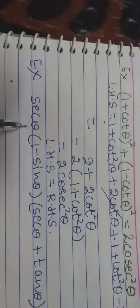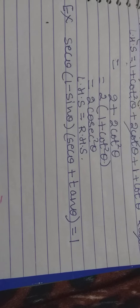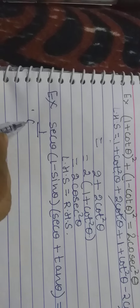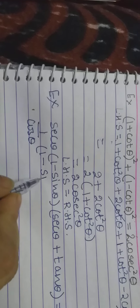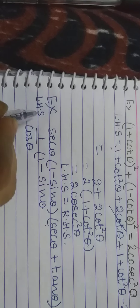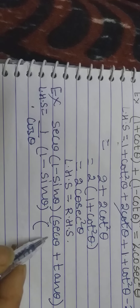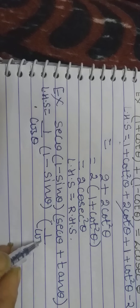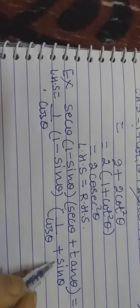Let me take another example. Now: sec theta bracket, 1 minus sin theta, into sec theta plus tan theta equals 1. Now what is sec theta? We know it is 1 upon cos theta. And what is tan theta? It is sin theta upon cos theta.